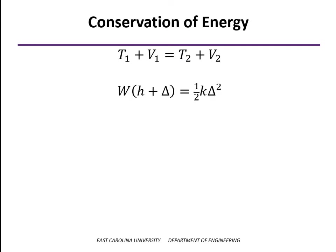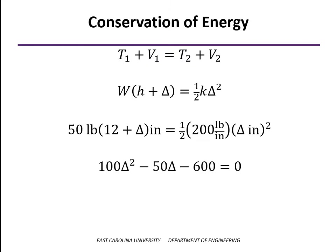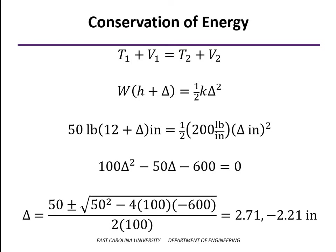And so substituting in the expressions from the previous slide, we have this expression right here. And putting in our known values, the weight's 50 pounds, the height's 12 inches, the spring stiffness k is 200 pounds per inch. The only unknown is delta, which will be in inches. And so we have a quadratic equation for that delta. And solving that, we come up with two roots, of course, one of which is negative, so it's not of interest to us. And our answer is that the spring will be compressed 2.71 inches at the max.